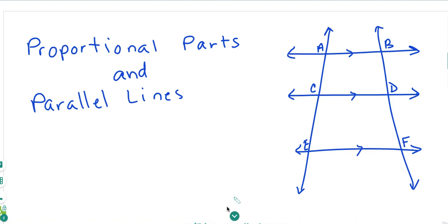Proportional Parts and Parallel Lines. If three or more parallel lines intersect two transversals, so we have three parallel lines intersecting two transversals, then they cut the transversals proportionally.